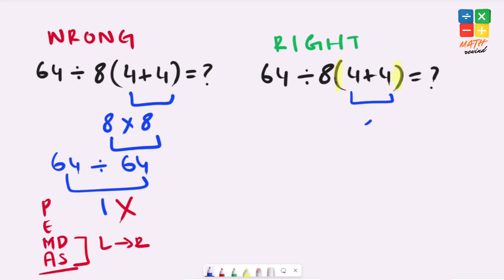We have 4 plus 4 which gives us 8 and our expression simplifies to 64 divided by 8 times 8.